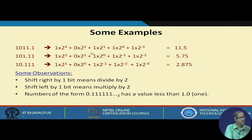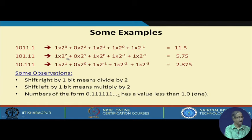If you want to convert it into decimal, you multiply each digit position by its weight: 2 to the power 3, 2 to the power 2, 2 to the power 1, and for the fractional part 2 to the power minus 1. So the value becomes 11.5. Similarly, the number 101.11 will have a value of 5.75. And if you take a number 10.111, on the fractional part the weights will be minus 1, minus 2, and minus 3, so the value will be 2.875.